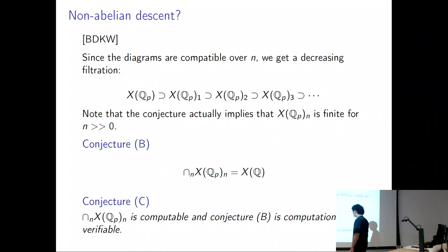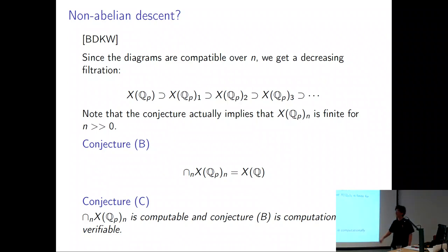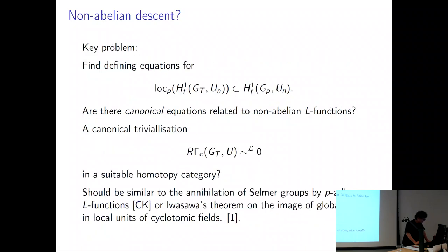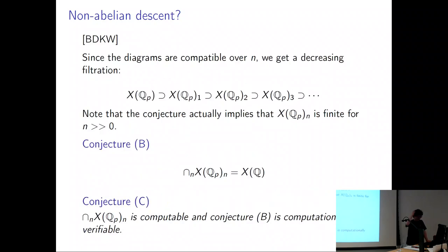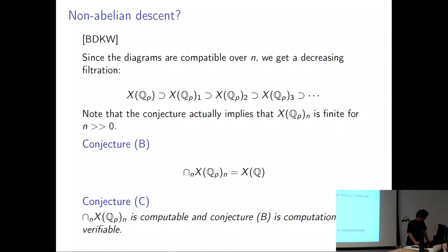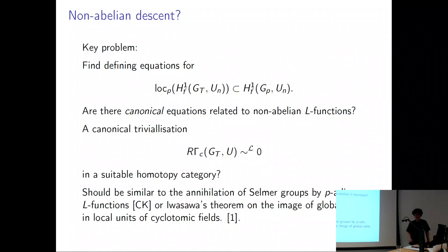Conjecture C is that this intersection should in fact be computable. So that's the non-Archimedean, non-abelian effective Mordell conjecture — and you see, it's the ABC conjecture. What I view as the really key problem in this theory is understanding the image of the localization map — the localization from the global moduli spaces of principal bundles to the local one, possibly with more Selmer-type conditions at primes dividing L.